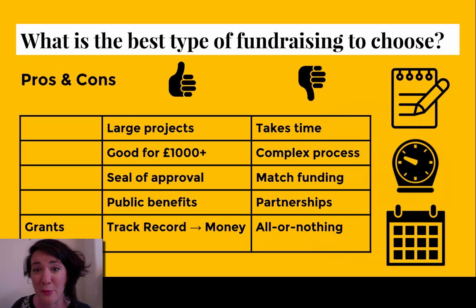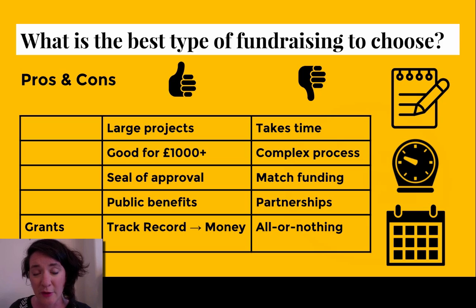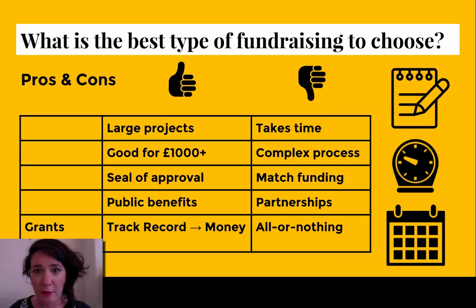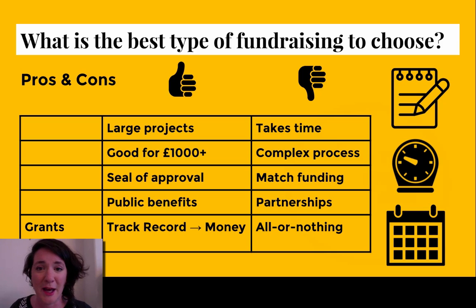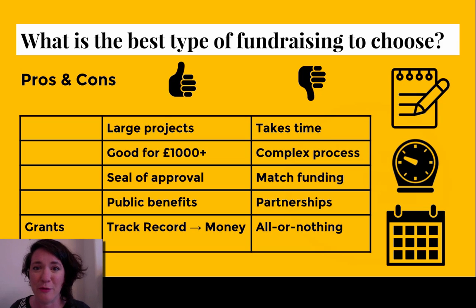Grant funding comes with its own pros and cons. Usually when you're applying for grants, it's for larger projects — really good for anything that has a budget over £1,000. A lot of funding providers have minimum and maximum amounts, so that's an important thing to know when you're looking. Receiving grant funding can also give you a really important seal of approval. When you see logos like the Arts Council Award on people's projects, that means somebody has deemed that project to be outstanding — a really important project that needs to happen. That can be a great seal of approval as you work with different audiences and try to get different people involved in your project.